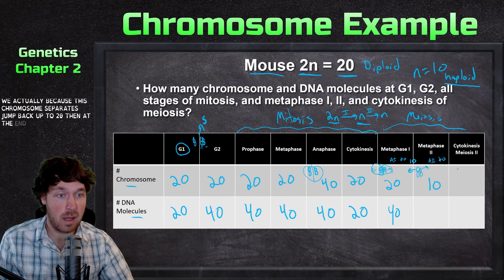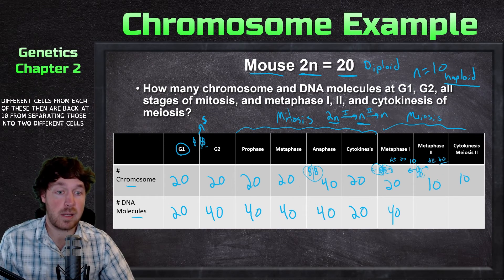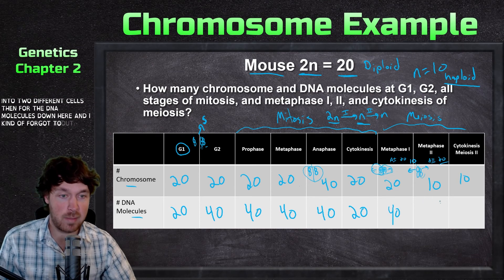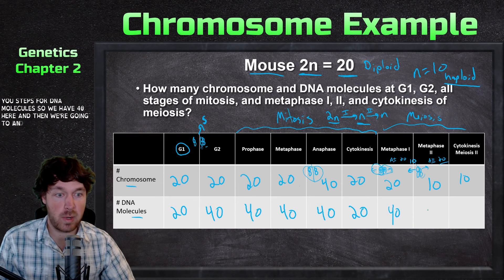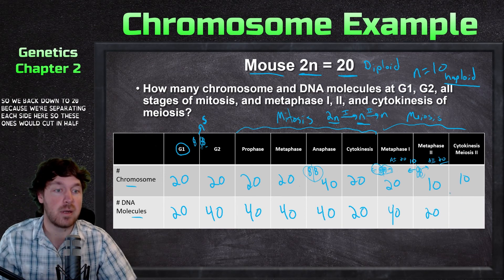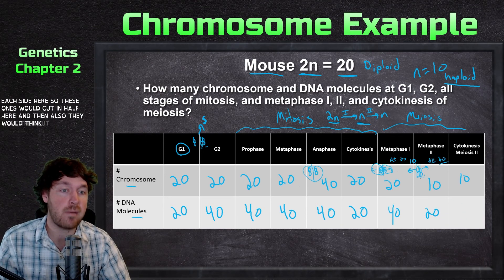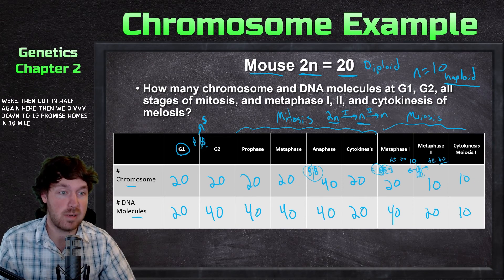At the end of cytokinesis in meiosis two, we separate into different cells, bringing us back to 10 chromosomes. For the DNA molecules: we have 40 at metaphase one, then those cut in half — down to 20 — and then cut in half again, so we end up with 10 chromosomes and 10 DNA molecules at the end of meiosis.